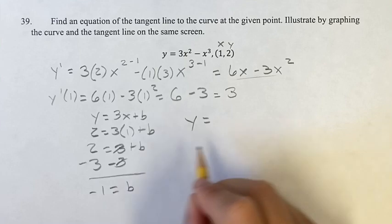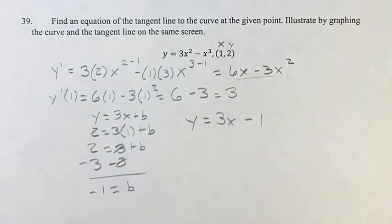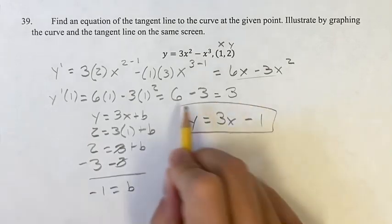So the final equation of the tangent line is y is equal to 3x plus b, which is negative 1, so minus 1. This is going to be your equation.